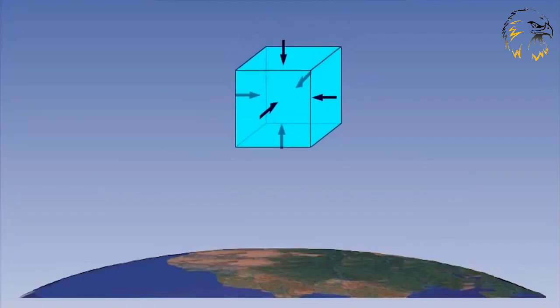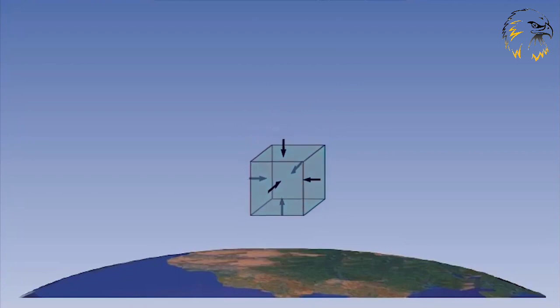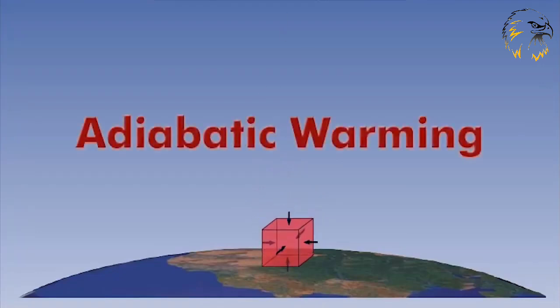The opposite is also true if we look at a parcel of air that is forced to drop to a lower level within the atmosphere. As the surrounding pressure increases it forces the parcel to contract. This increases the internal temperature of the parcel. Therefore we now have adiabatic warming.